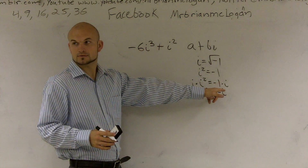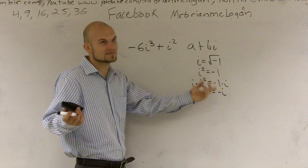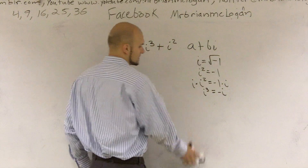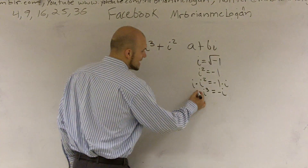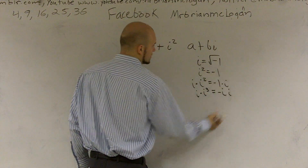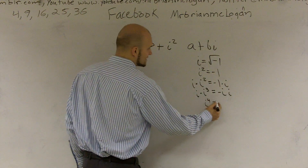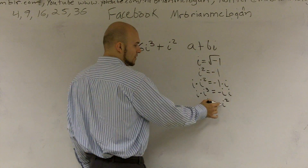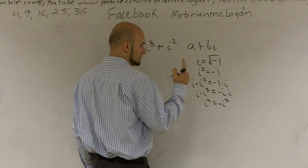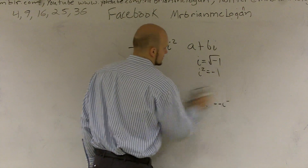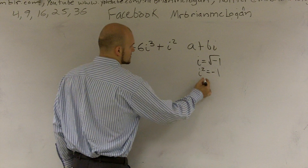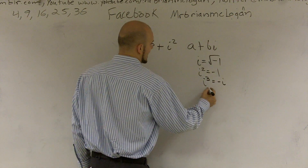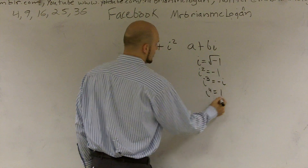Negative 1 times i gives you negative i. Then, if you multiply that again by i, you get i to the 4th equals negative i squared. Well, i squared is negative 1, and negative negative 1 gives you positive 1. So i cubed equals negative i, and i to the 4th equals 1.